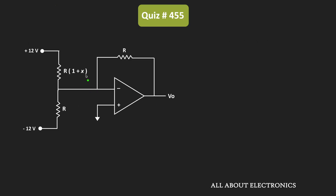To find the value of X, first let us find the expression of the output voltage in terms of these resistors. On the input side, we have two voltages: plus 12V and minus 12V. To find the expression of the output voltage, let us apply the principle of superposition.